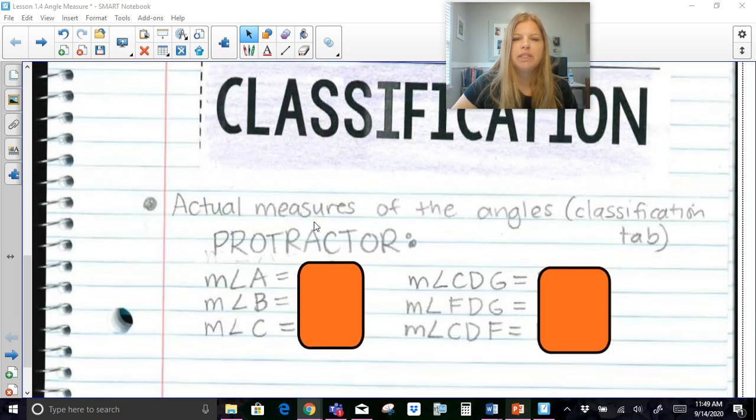Something else that we need to make sure that we know is we need to be able to also measure these angles. If you have the worksheet, I'm going to show you after the fact what the angle measures of A, B, and C are, and angle CDG, FDG, and CDF, and that's when we get to the classification tab. So if you have a protractor and you'll be able to measure them along with me, that's great. If not, just simply follow along.